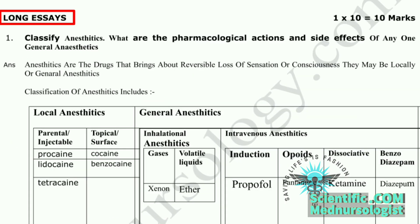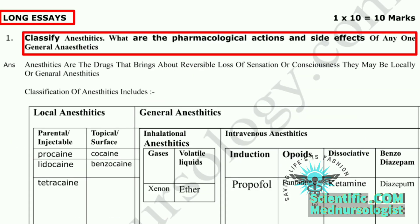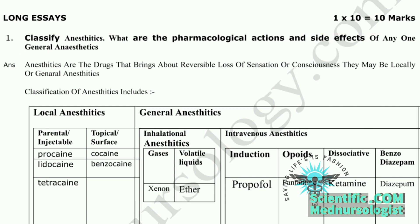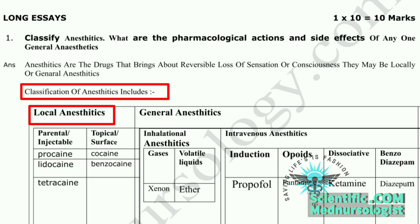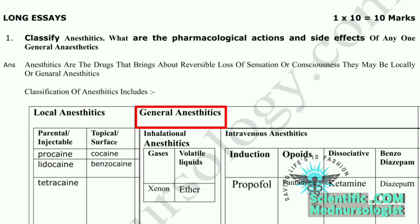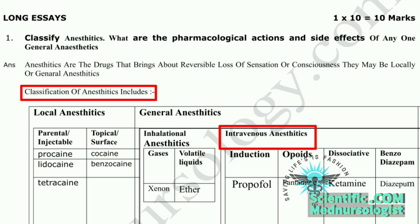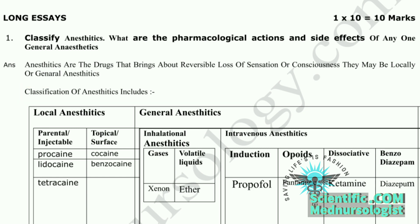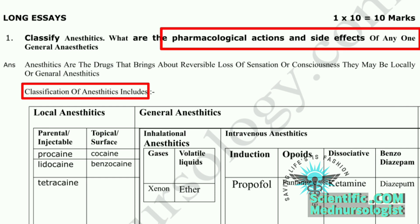Our first part is long essay which consists of a single question: classify anesthetics and write the action and adverse effects of any one general anesthetic. For this question you need to classify anesthetics on different bases: first, local anesthetics; second, general anesthetics — which includes inhalation and intravenous. This is the classification shown as a flow chart on screen. You need to write the classification first and then write the actions and side effects of any one general anesthetic.